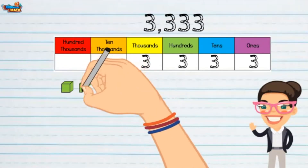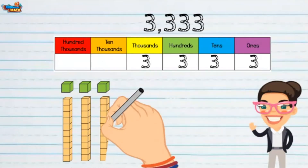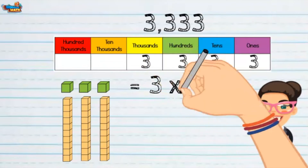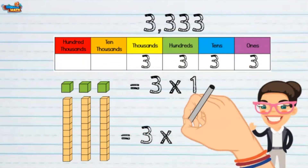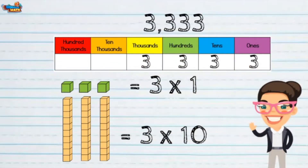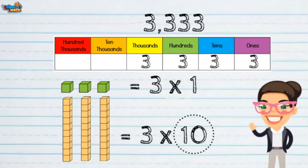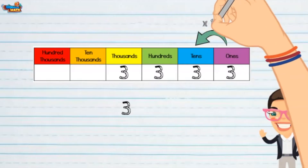The cubes are worth 3 times 1, and the tens are represented by 3 times 10. The tens place is 10 times larger than the ones place. Looking at a place value chart, as we move right to left, the place value increases by 10 each place value.